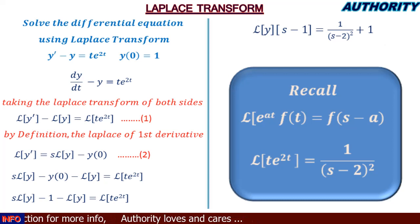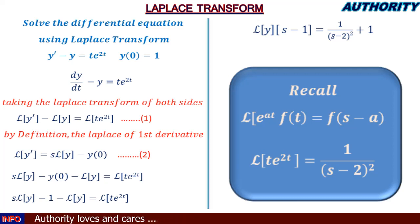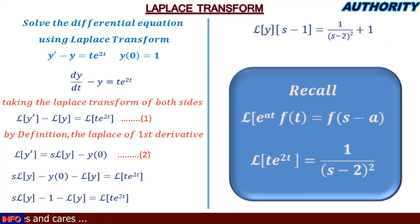Our function here is t multiplied by e^{2t}. The Laplace transform of t is 1/s², so by the first shifting property, substituting s with s−2, the Laplace transform of t·e^{2t} is 1/(s−2)². Taking the −1 to the other side gives +1, so we have: L{y}·(s−1) = 1/(s−2)² + 1.